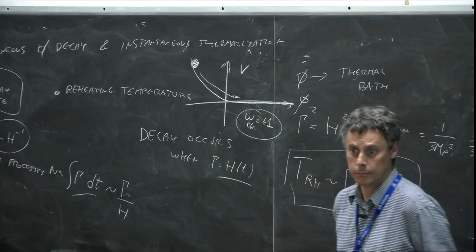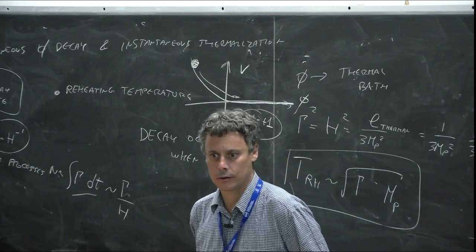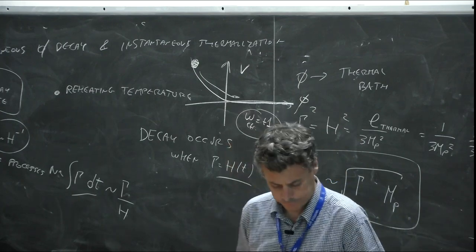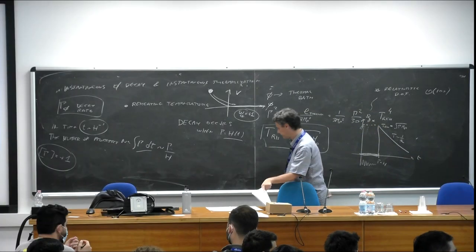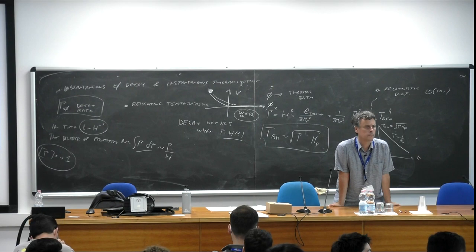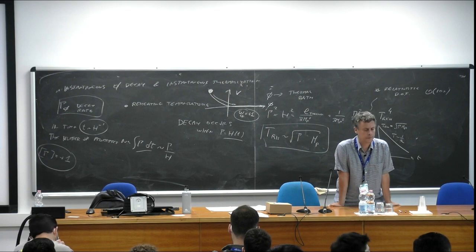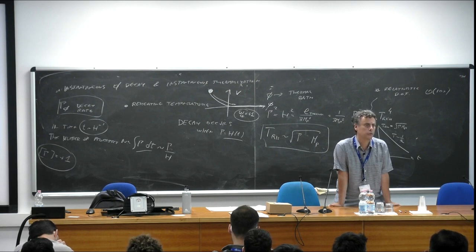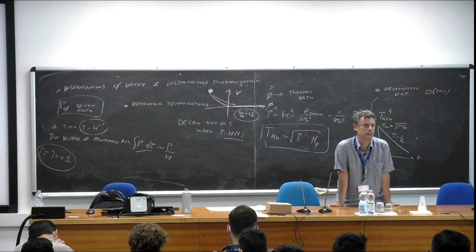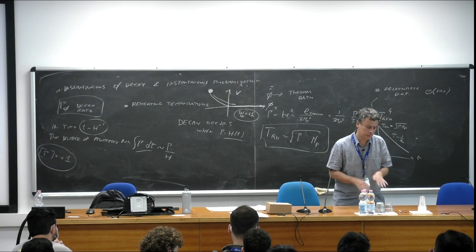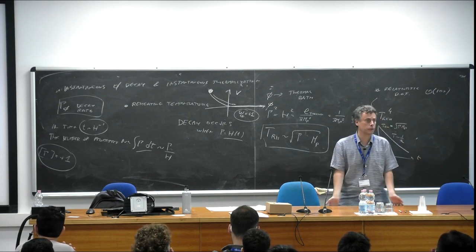Question: we want reheating before BBN, but is there also an upper bound? Within certain models, yes — for example there is an upper bound on the reheating temperature to avoid overproducing gravitinos. So the upper bound depends on the model, while the lower bound of T_reh > 2 MeV is really robust.